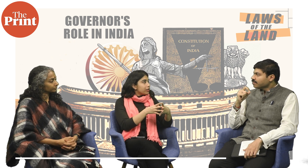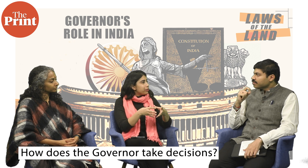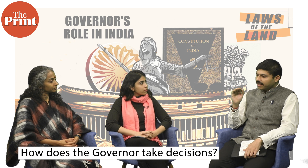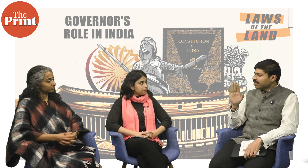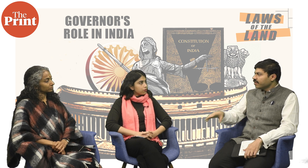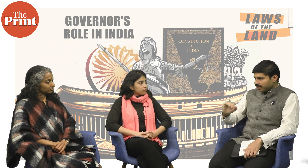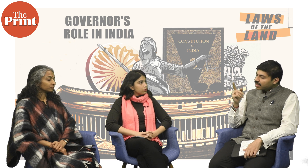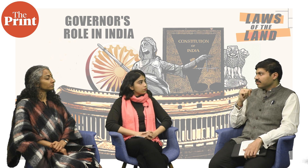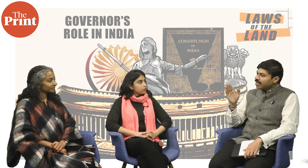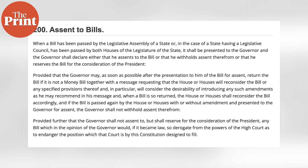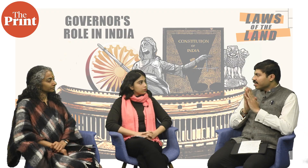Regarding when a governor acts independently versus on the advice of the council of ministers: certain roles, like clemency or pardon, he exercises independently. Otherwise, for executive actions, he must act on the aid and advice of the council of ministers. When the legislative assembly passes a bill and sends it for assent, there is very little discretion. Unless the bill is completely unconstitutional or he requires a high court opinion, the provisos in Article 200 provide exhaustive safeguards for the limited cases where assent can be withheld.